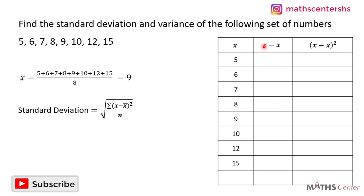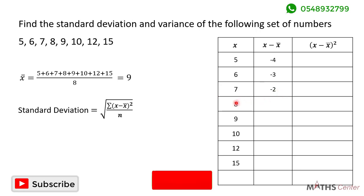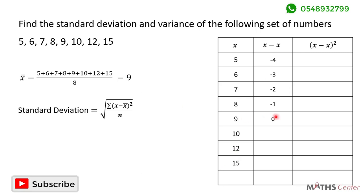In the second column we need x minus the mean, so we subtract 9 from each x value. 5 minus 9 is negative 4. 6 minus 9 is negative 3. 7 minus 9 is negative 2. 8 minus 9 is negative 1. 9 minus 9 is 0. 10 minus 9 is 1. 12 minus 9 is 3. And 15 minus 9 is 6.